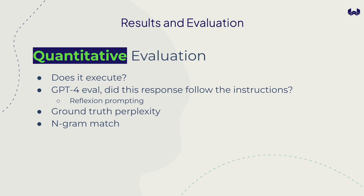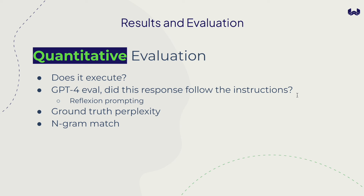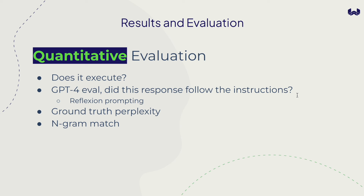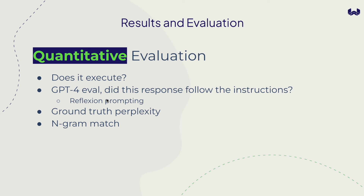Let's look at how we plan to graduate our evaluation of these models. There's the 'does it execute' test, but you could also have cases where the query executes but doesn't follow the instructions. One strategy is using GPT-4 to ask 'does the response follow the instructions?' Another is reflection prompting — 'did it follow the instructions? No. How would you fix it?' — which might correct queries and feed them back into training data. These are ways to get evaluation metrics off the shelf.